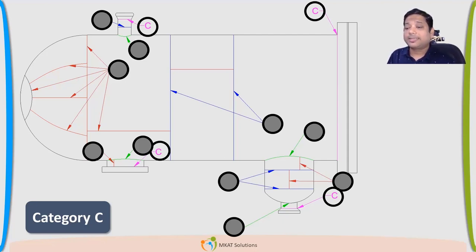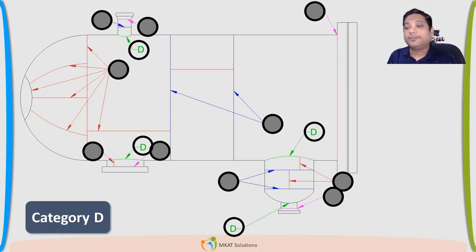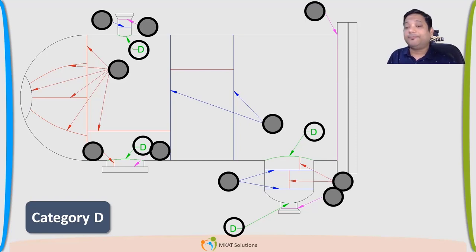Now Category D: any nozzle connected to a shell. Any arrangement like a sump connected to a shell will also be Category D. So any connections — pipe directly connected, nozzle connected, or sump connected — all those will be part of Category D.